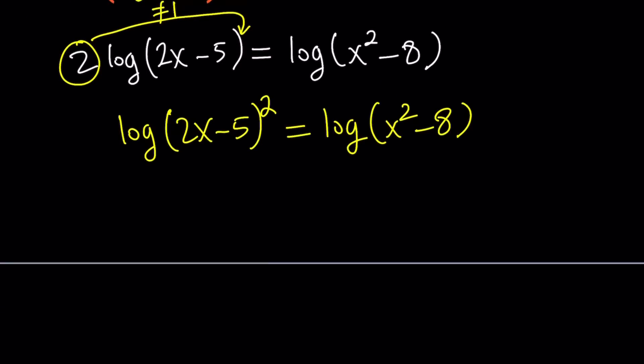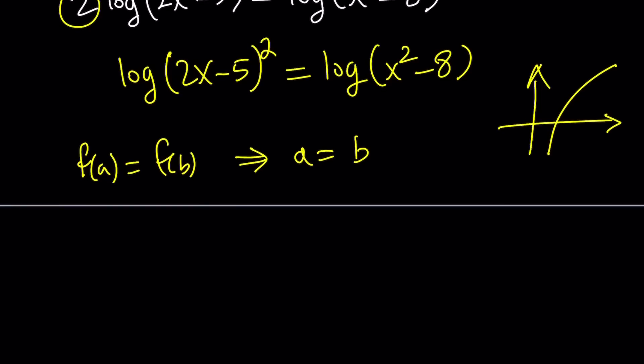Now, since we have the log on both sides and the logarithm function is 1 to 1, which means if you have two outputs that are the same, they have to be coming from the same input. In other words, if you have f of a equals f of b in a 1 to 1 function, this implies a equals b. In log function, it's always 1 to 1, always increasing. So let's go ahead and set the arguments, the insides equal to each other. 2x minus 5 squared equals x squared minus 8.